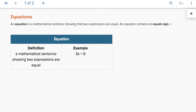Equations. An equation is a mathematical sentence showing that two expressions are equal. An equation contains an equal sign. For example, a mathematical sentence showing two expressions are equal: 3x is equal to 6. Making use of an equal sign, make the given expression an equation.